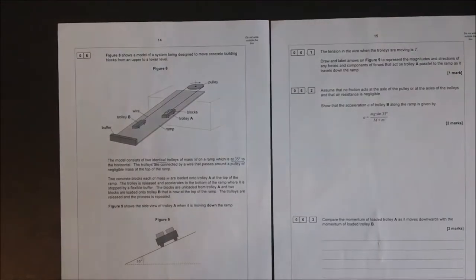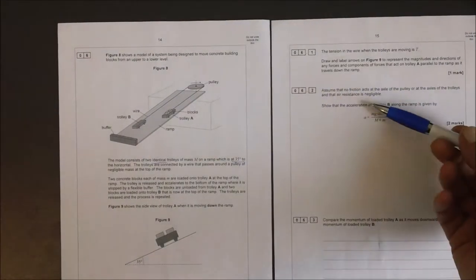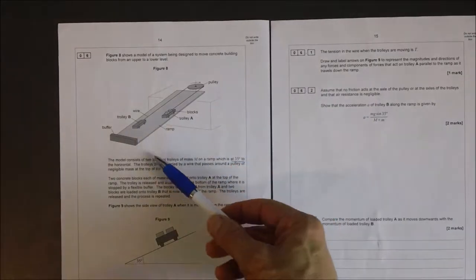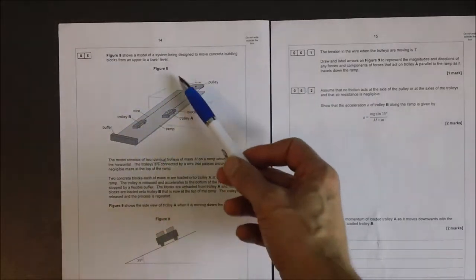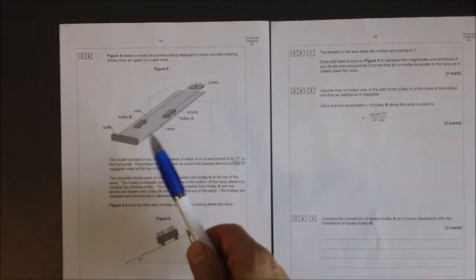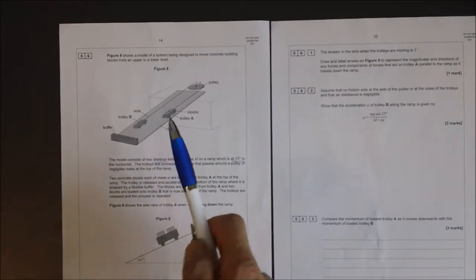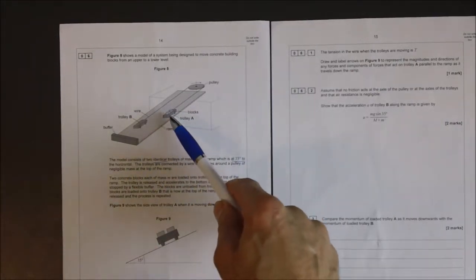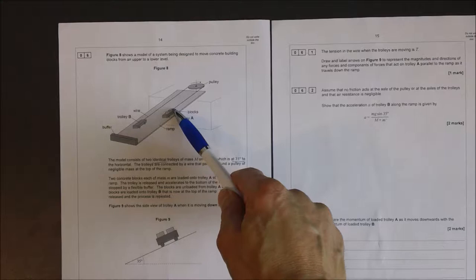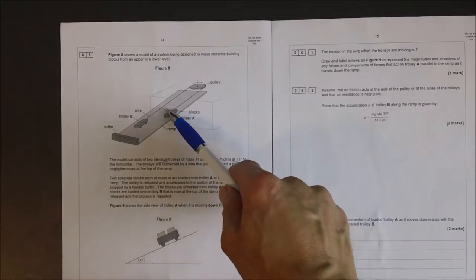So if we look at this question here, and in particular 6.2, what we're trying to say here is we've got the two-trolley system. Now one of the biggest misconceptions you're ever going to see here is people who just assume that the force is just the force of one trolley or the force of one trolley in the blocks.